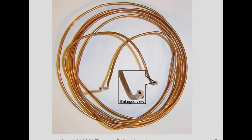Here's an example of a cap tube. Many times these cap tubes in a system will be 5, 6, 7, 8, 9, or 10 feet long depending on the application, and these inside diameters are going to be very, very small. Basically, it's just a tiny tube where the refrigerant flows in one end and out the other.